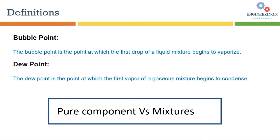Let's compare bubble point and dew point of a pure component with mixtures. In the case of pure components, bubble point and dew point are the same. For example, if we have water at one atmospheric pressure and heat it up to 100°C, all water will convert from liquid phase to vapor phase. Vice versa, at the same pressure, if you cool down the water vapors at 100°C, all vapors will convert into liquid phase. So water has 100°C as both its boiling temperature and its dew point temperature.